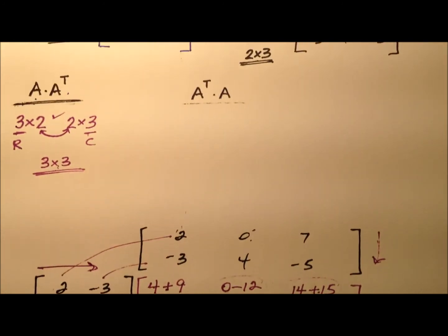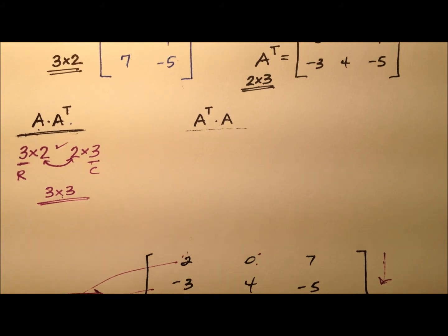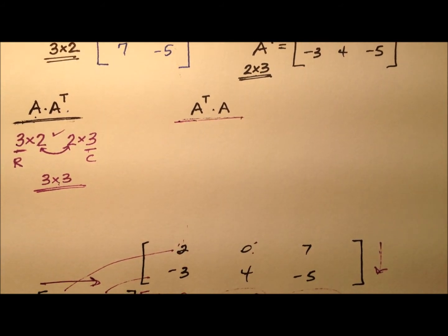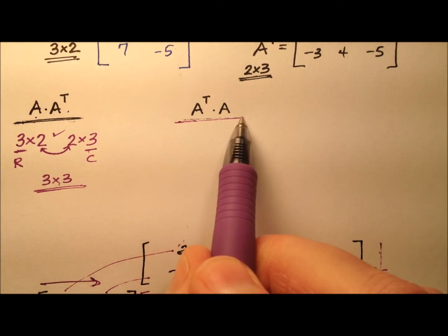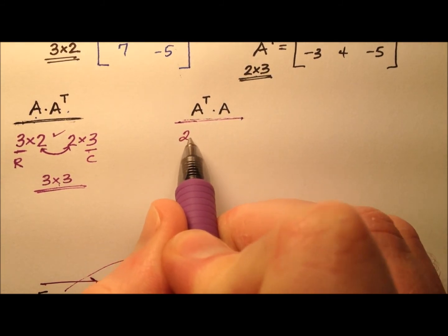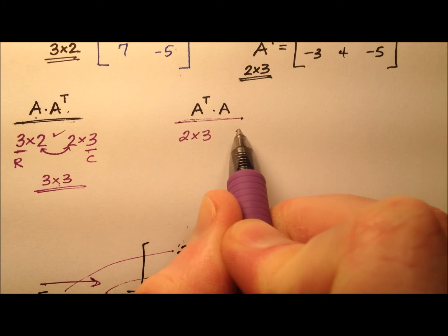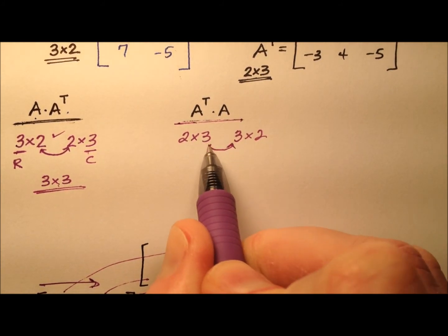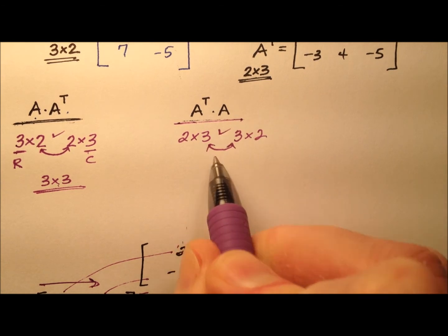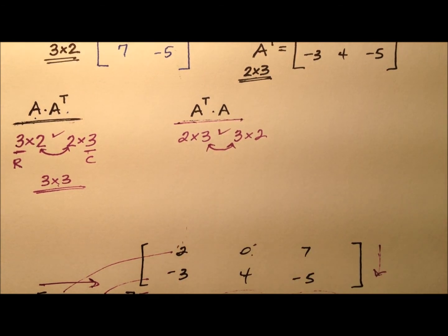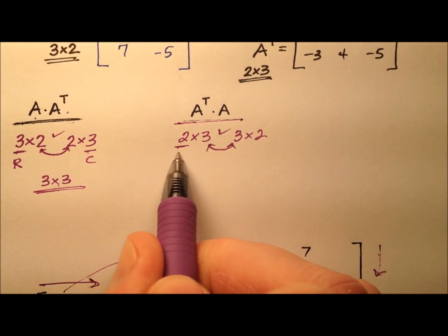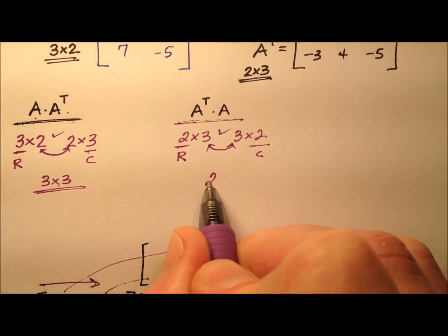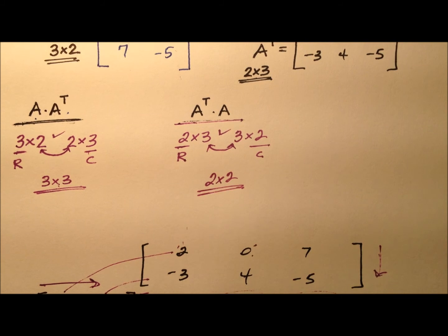Now let's do the reversal — the transpose of A multiplied by A. The dimensions here: the transpose of A is a two by three, and A is a three by two. The inner dimensions are the same, so this multiplication is defined. The product matrix will have two rows and two columns — a two by two square matrix.